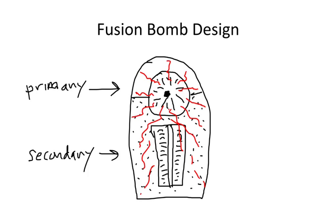The shock waves from the fission explosion initiate fission in the plutonium spark plug, which then starts to give off radiation, heat, and neutrons. The spark plug at the center is now undergoing fission, and that fission is sending neutrons into the surrounding lithium-deuteride. When those neutrons go into the lithium-deuteride, they combine with the lithium to make tritium. Now you've got deuterium and tritium inside this part of the bomb — and that's how we get fusion. The combination of high temperature and pressure is sufficient for the tritium atoms to fuse with the deuterium atoms, producing fusion.